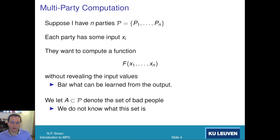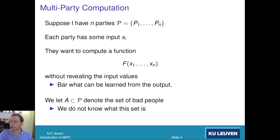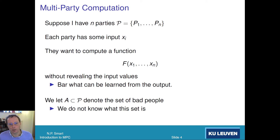We also have to think about how bad people can interact with this protocol. We have a set of parties called a subset A, which is contained in P, which denotes the set of bad people. Notice that's different from normal encryption. In normal encryption, you have Alice and Bob — the bad person is the person outside the protocol, Eve. Here in multi-party computation, we're interested in bad people actually engaging with the protocol, which is a much more difficult task.